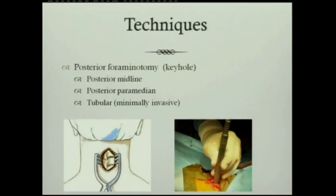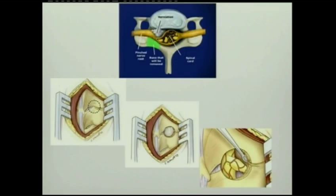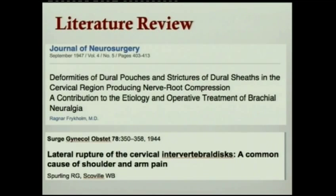Regarding the technique, posterior foraminotomy can be done through a posterior midline or paramedian approach, or more recently through minimally invasive techniques. The key is to enter the interlaminar space, preserve more than 50% of the facet joint, preserve the lateral capsule, expose the nerve root, and retract it cranially to access the disc. Historically, this procedure was first described in 1944 by Sperling and in 1947 by Frank Holmes for managing cervical radiculopathy.